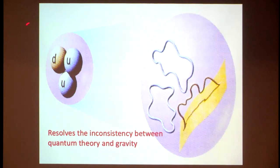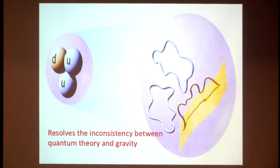String theory seems to resolve the problem of having both gravity and other particles as excitations of this vibrating string. These interactions give finite answers, which is remarkable. When we talk about protons made of quarks and zoom in, we should think of them as made of entities like strings — open or closed — and we've learned how this resolves the inconsistencies between quantum theory and gravity.